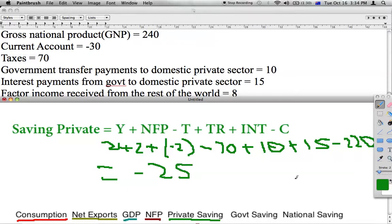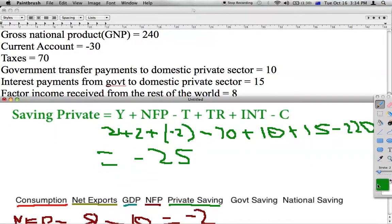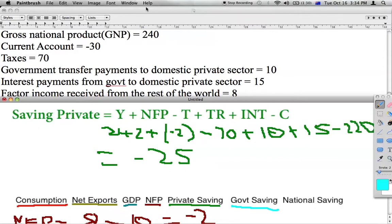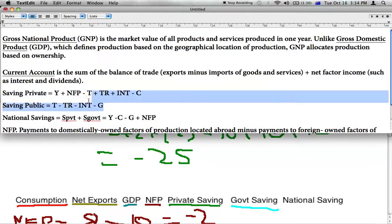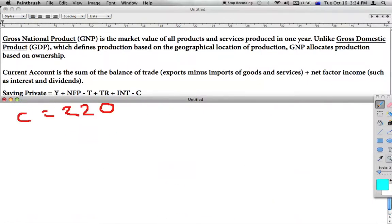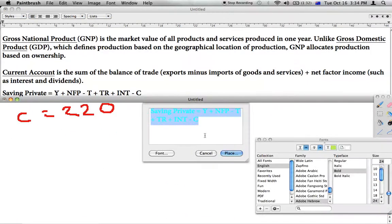Alright, so the formula, or what we can do next, is our government saving, or our public saving. The formula for that is just here. So it's our tax minus our transfer, tax being the income to the government, minus any transfer payments, any interest payments, and any government spending. Just copy and paste that in here.